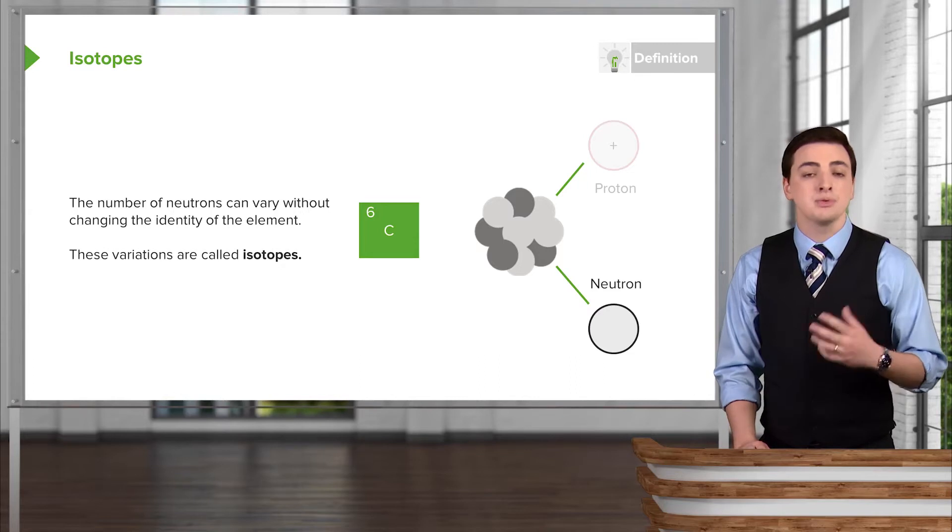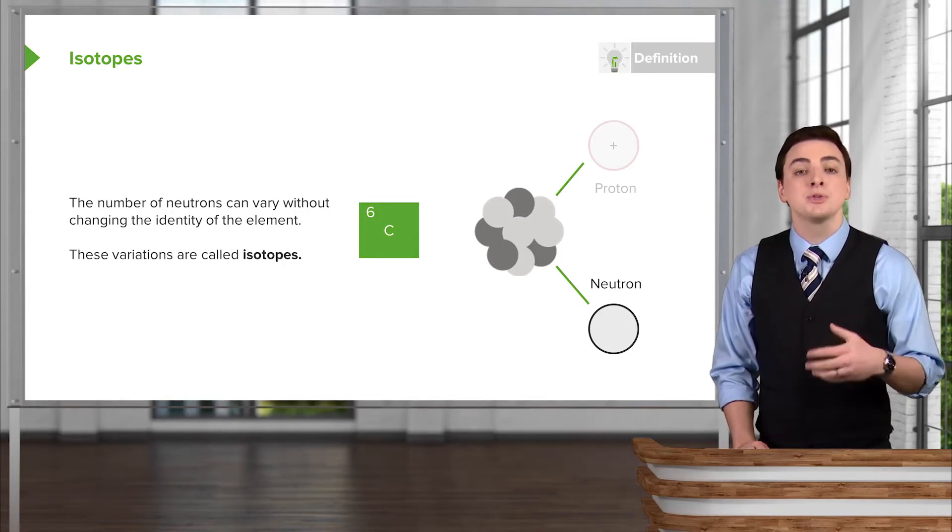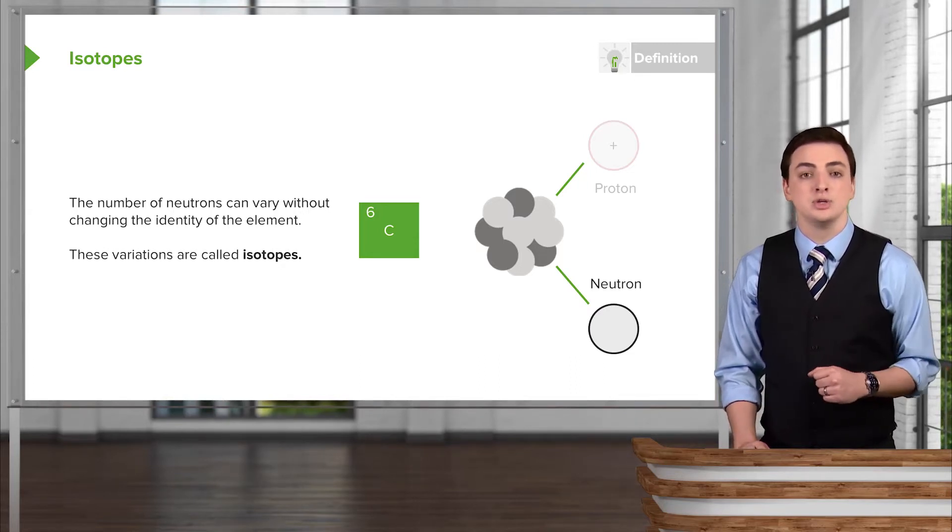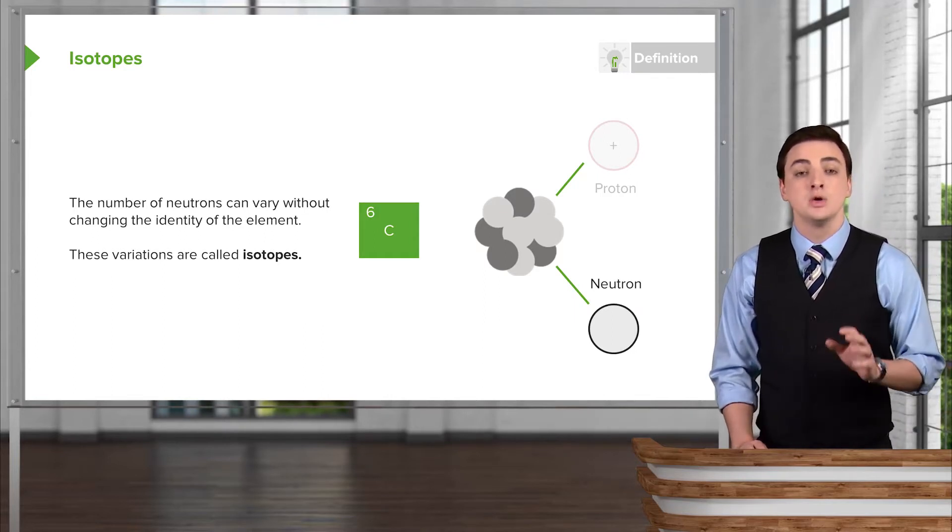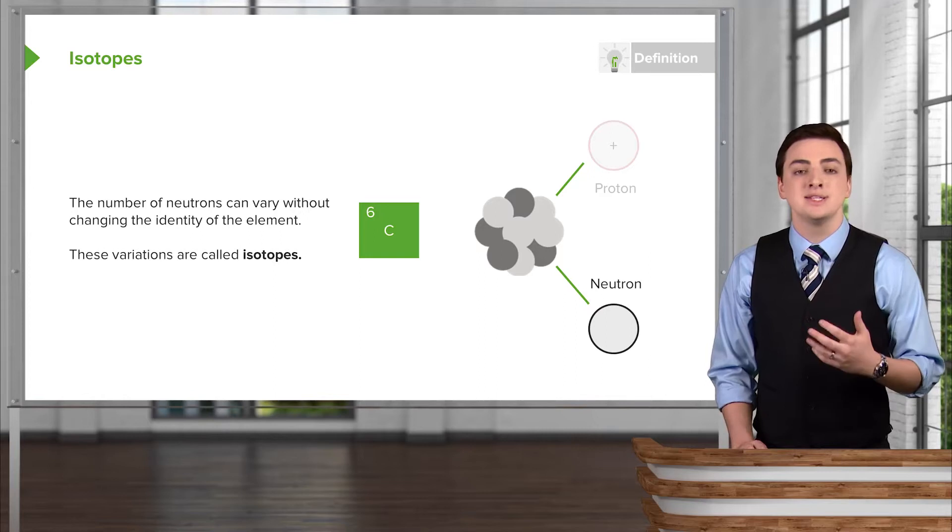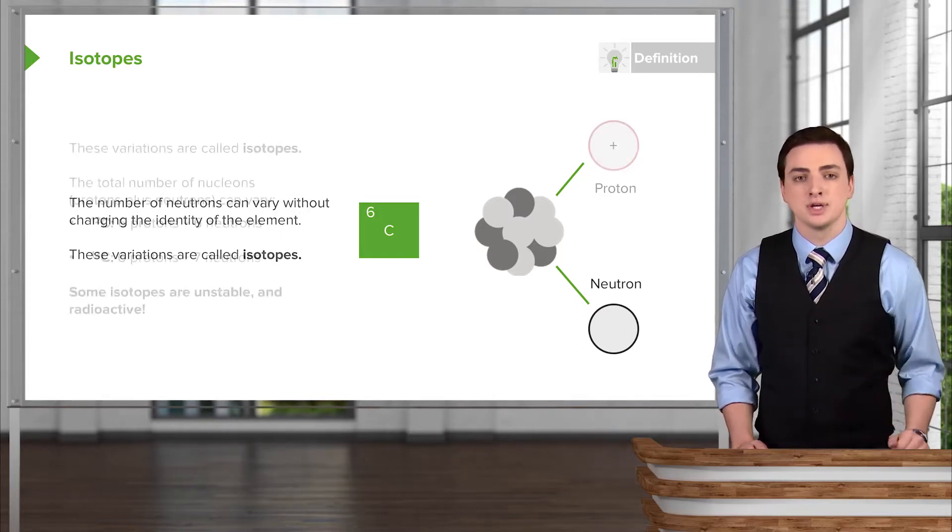So for carbon, for example, there might be six neutrons in the nucleus, but there might be other numbers of neutrons in the nucleus. In those cases we would say that this is isotopes of carbon, while the identity of carbon remains the same because the number of protons is still six protons.